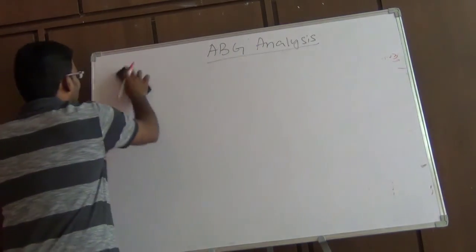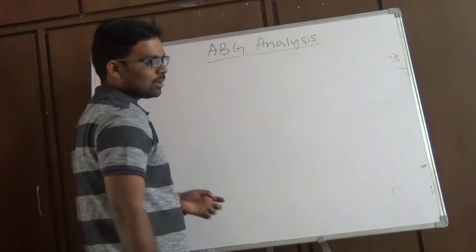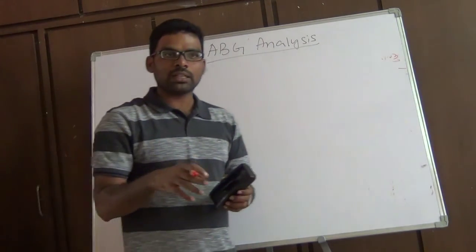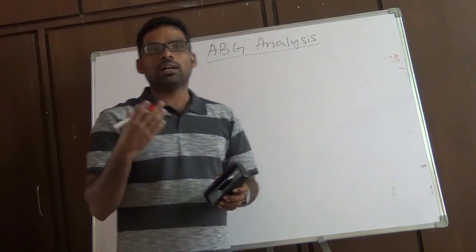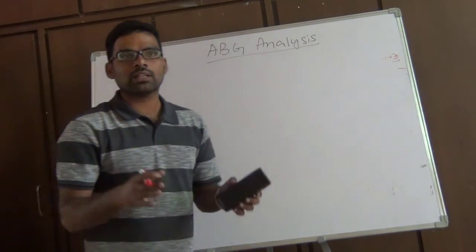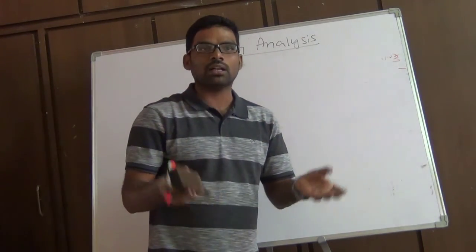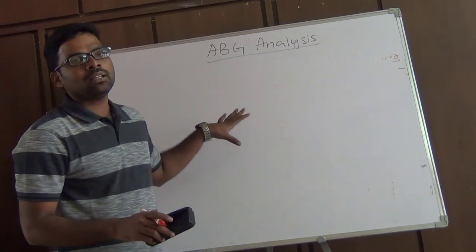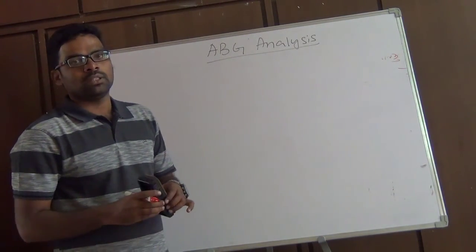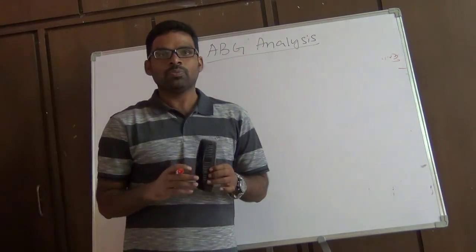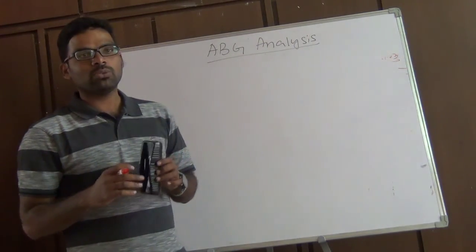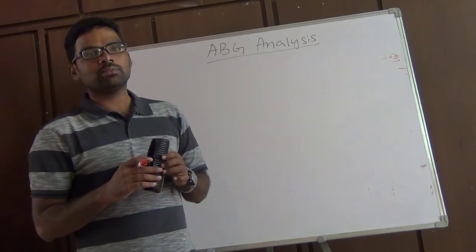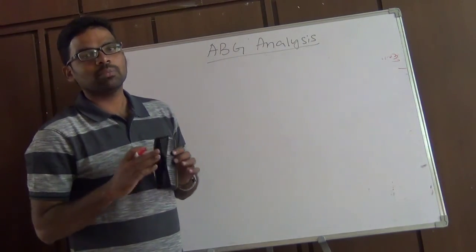In summary, we have learned the Henderson-Hasselbalch equation, how to interpret ABG step by step, what compensatory mechanisms occur in the body, how to calculate whether compensation is adequate or under-compensated, and the concept of the anion gap. Thank you for watching. For more videos, subscribe to the channel Conception Medicine by Dr. Pratav.